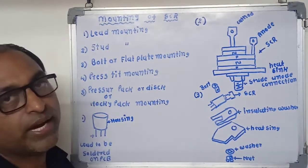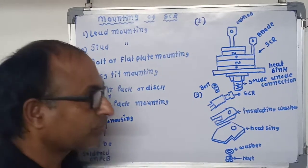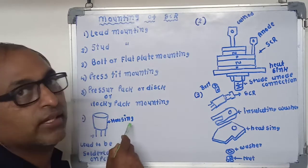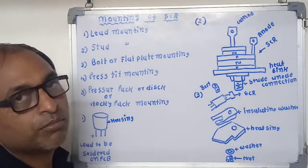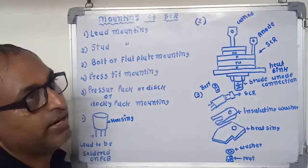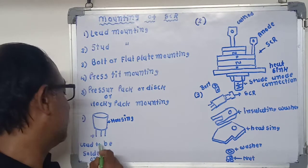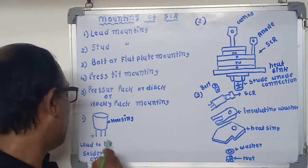It does not require additional heat sink or cooling system. The housing is sufficient to dissipate the heat in the atmosphere by radiation and convection. It has flying leads. These leads are used to mount the thyristor. The leads are directly soldered on the PCB.